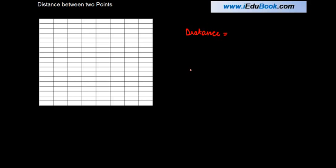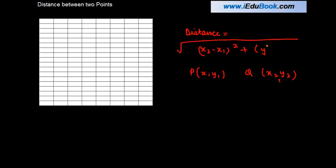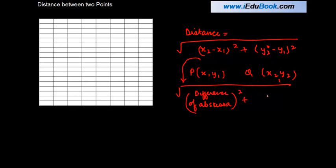So let's say there are two points P whose coordinates are x1, y1 and Q whose coordinates are x2, y2. Then the distance between these two points is calculated as square root of (x2 minus x1) whole square plus (y2 minus y1) whole square, or in other words it is the square root of difference of abscissa square plus difference of ordinate square.